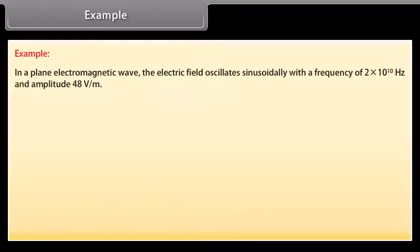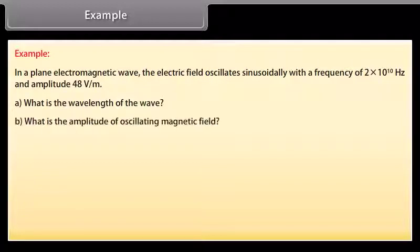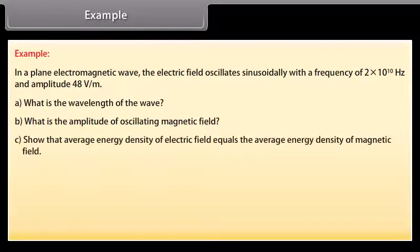Example. Let's take an example of electromagnetic waves. In a plane electromagnetic wave the electric field oscillates sinusoidally with a frequency of 2 into 10 raised to the power 10 Hertz and amplitude 48 volt per meter. What is the wavelength of the wave? What is the amplitude of oscillating magnetic field? Show that average energy density of electric field equals the average energy density of magnetic field.